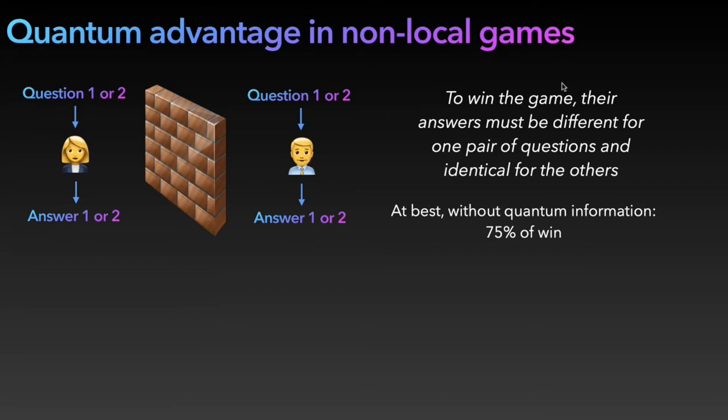In the simplest example, called the CHSH game, they have two questions each and can give one answer or the other. So two questions, two answers each. The rule of the game is that for three pairs of questions, their answers must be the same, and for the last pair, their answers must be different.